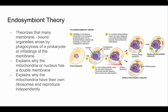This also explains why the nucleus has two membranes: to engulf something, your own membrane surrounds it, and that second membrane stays — resulting in a double membrane. Similarly, mitochondria have two membranes and can reproduce independently because they carry bacterial genes. It may no longer be a living independent cell, but there is strong evidence it once was.